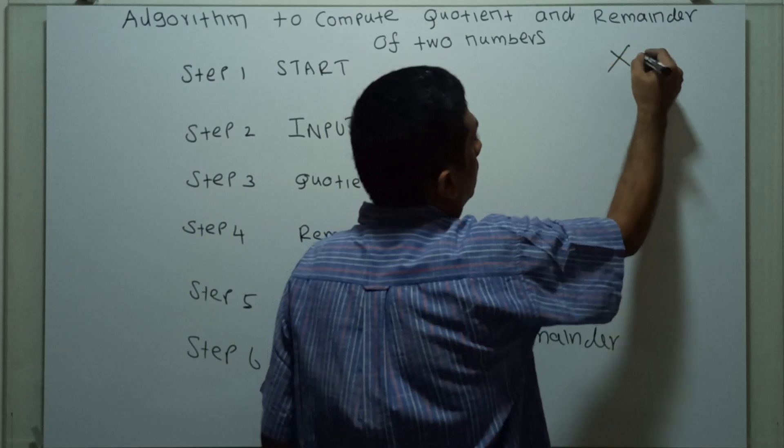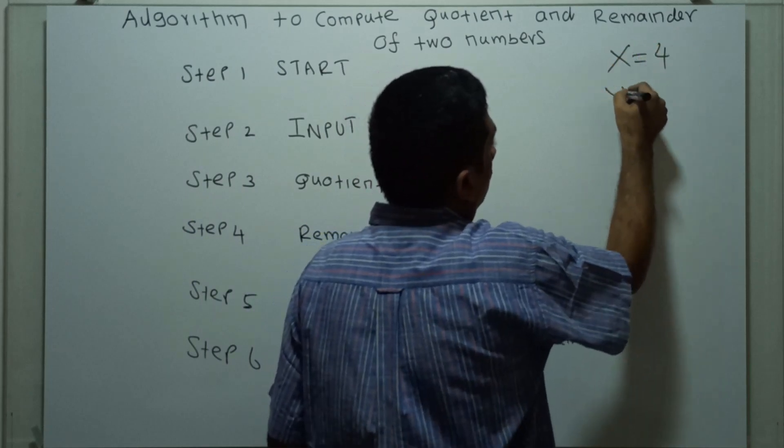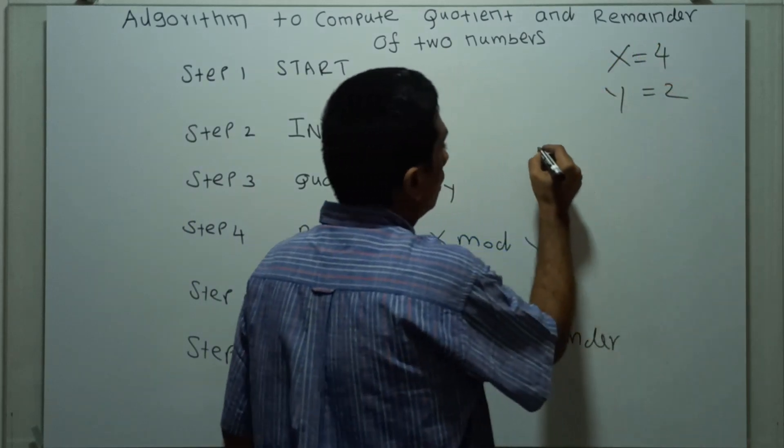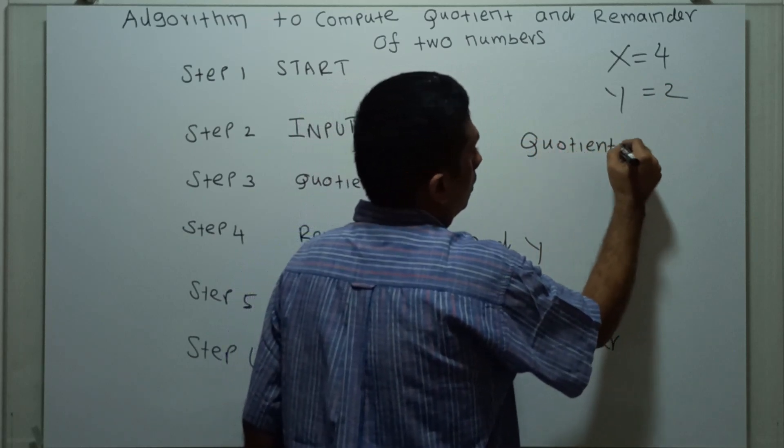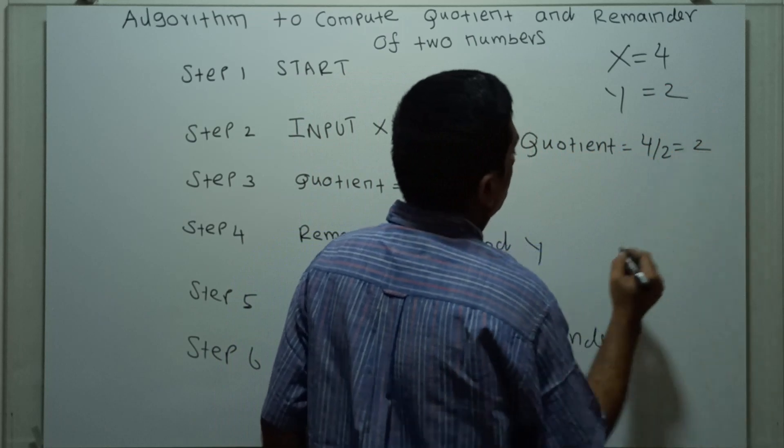For example, I am having x equal to 4, y equal to 2. Quotient equal to 4 divided by 2 is equal to 2.